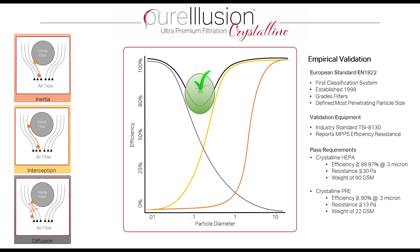EN 1822 is the first classification system developed in 1998 for HEPA filters. It grades HEPA filters — so on the side of a HEPA filter, you might see H12 or H13. The larger the number, the greater the efficiency of capture at 0.3 microns, the most penetrating particle size.